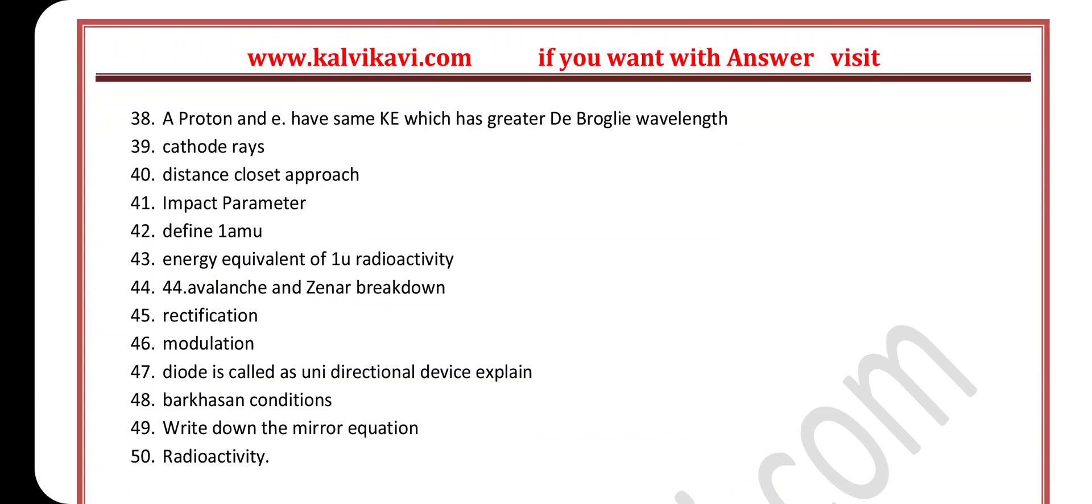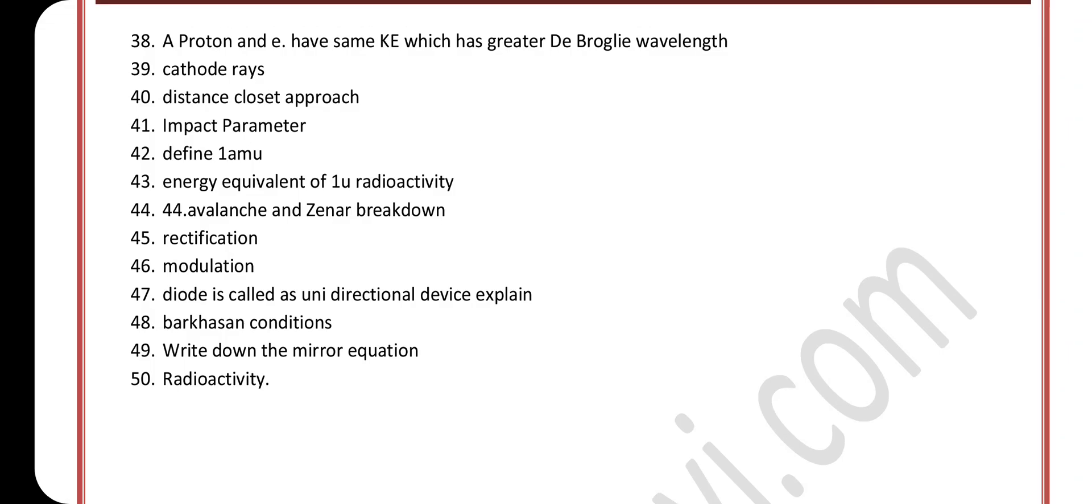Question 44, avalanche and Zener breakdown. Question 45, rectification. Question 46, modulation. Question 47, diode is called as unidirectional device, explain.